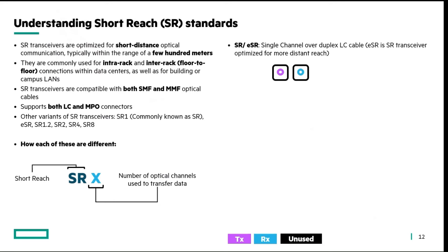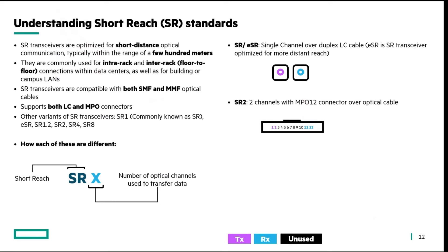For SR and ESR — ESR being extended SR for a little more distance — a single channel is used for data transmission over a duplex LC cable. For SR2, two channels are used over an MPO-12 connector. It's important to understand how MPO connectors are mapped and which pins are used. For MPO-12 connectors, pins 1, 2 and 11, 12 are used — pins 1 and 2 being the transmission pins and 11 and 12 being the receiver pins, making two channels.